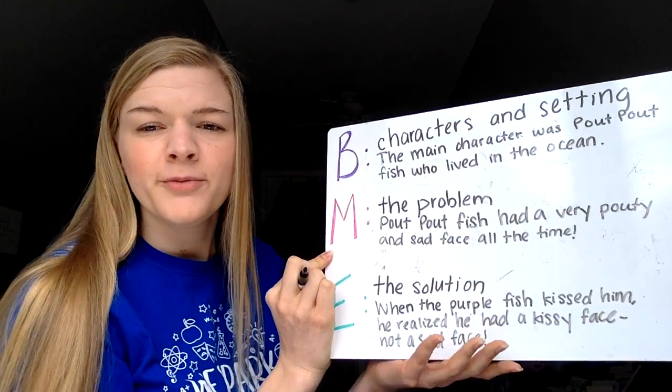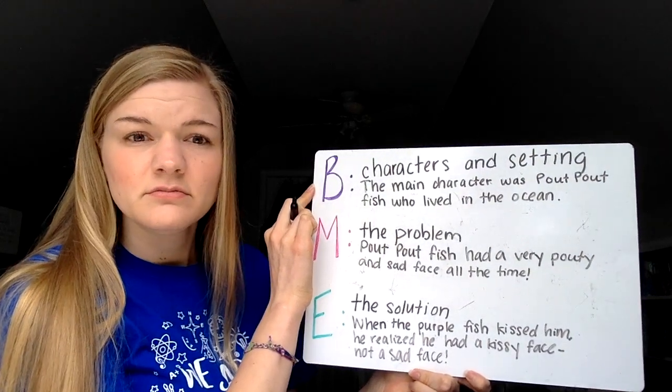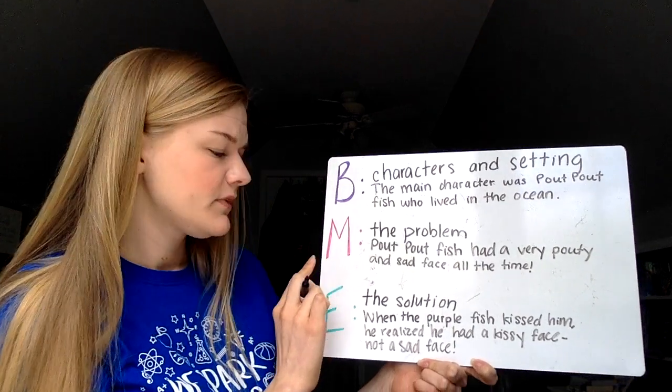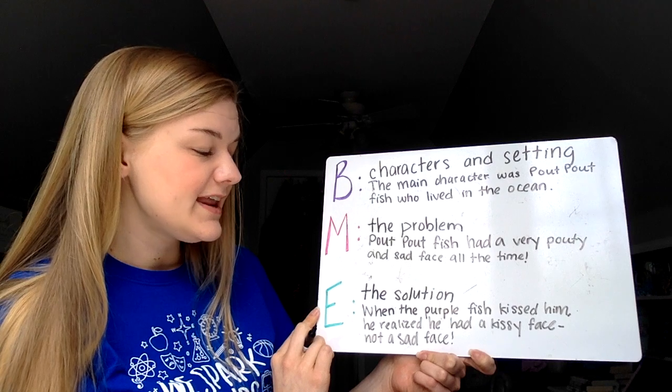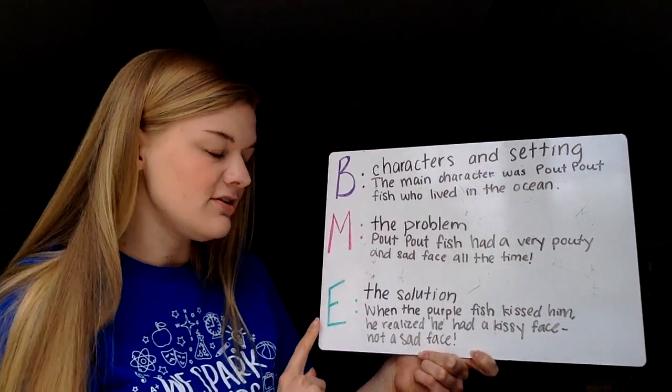So let's read back over what we wrote for the beginning, middle, and end and see if it retells the story pretty well. At the beginning, the main character was the pout pout fish, who lived in the ocean. In the middle, the pout pout fish had a very pouty and sad face all the time — that was the problem. At the end, when the purple fish kissed him, he realized he had a kissy face and not a sad face. We were able to use the beginning, middle, and end to tell the story. This week, as you're reading different books — maybe at home or on Raz-Kids — you'll have a piece of paper or a form to fill out online to tell your teachers about the beginning, middle, and end of the story you read. Have a great week — we miss you guys so much and can't wait until we all get to be back together again. Have a great Monday!